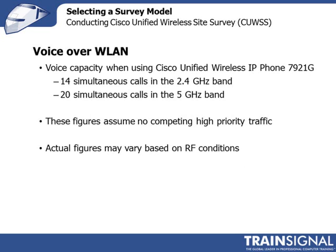The last thing to think about when deploying voice over wireless LAN is the number of voice calls that can be made within one access point — the capacity of the access point to support voice calls. If you're deploying an 802.11g/n access point, you'd expect about 14 simultaneous calls in the 2.4 GHz band. If you're deploying an 802.11a/n radio in the 5 GHz band, because there's less noise, you can expect perhaps 20 calls in a 20 MHz channel.